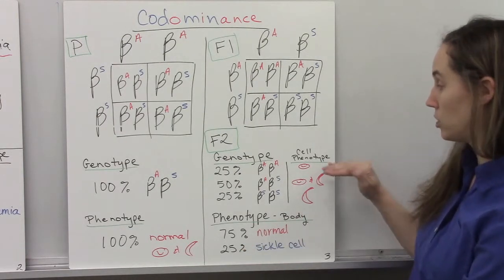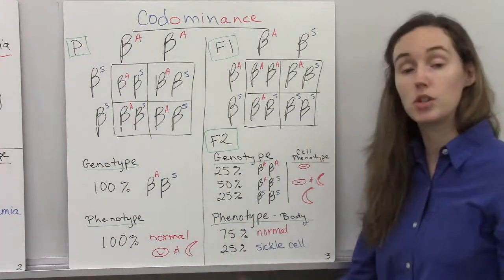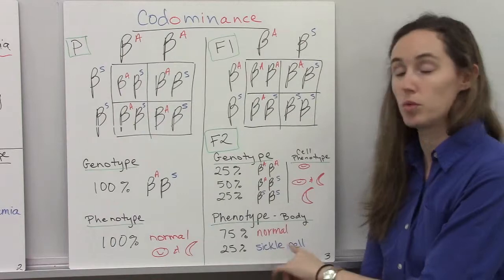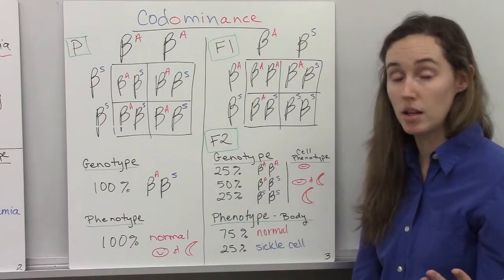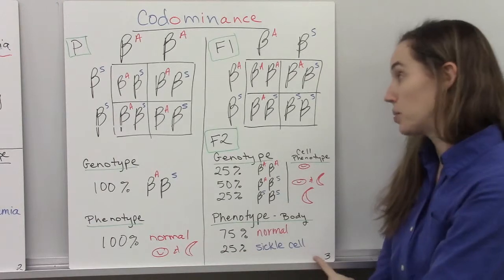And so cellularly, this is what we're going to see, but on the big picture outside their body, 75% will be normal. They will not exhibit the symptoms of sickle cell anemia and 25% will.